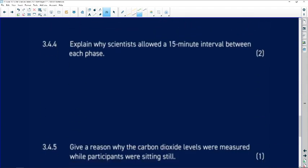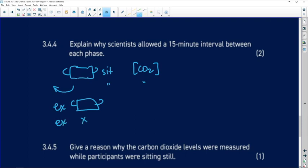Explain why scientists allowed that 15-minute interval between each phase. They did something: put the mask on and sit, and they measured the carbon dioxide levels. Then take the mask off and sit and measure the carbon dioxide levels. Then exercise without the mask, then exercise with the mask on. But in between each of those situations, they allowed a 15-minute interval. Explain why.